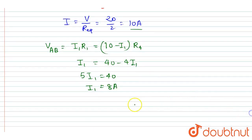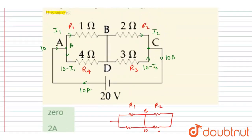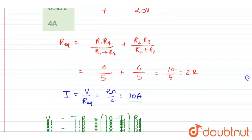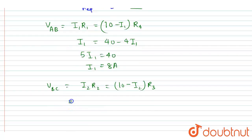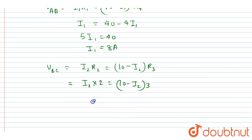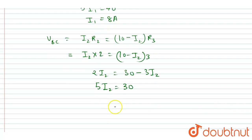Now for the potential drop between points B and C: I2·R2 equals (10 − I2)·R3. Substituting R2 = 2 and R3 = 3: 2·I2 = (10 − I2)·3 = 30 − 3·I2, so 5·I2 = 30, therefore I2 = 6 ampere.